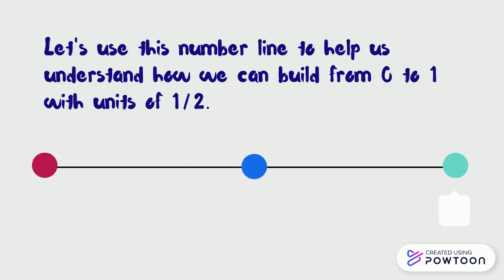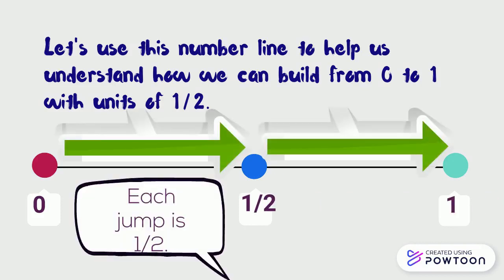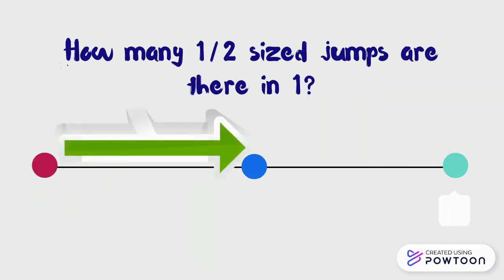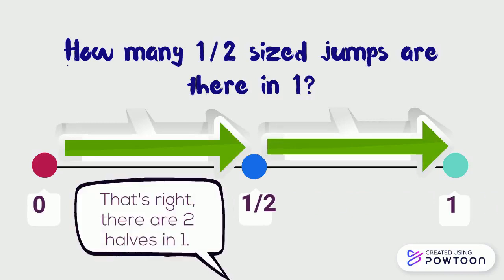Let's use this number line to help us understand how we can build from zero to one with units of one half. Each jump is one half. How many half-sized jumps are there in one? That's right — there are two halves in one.